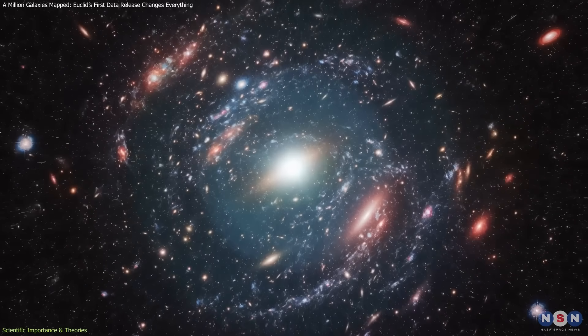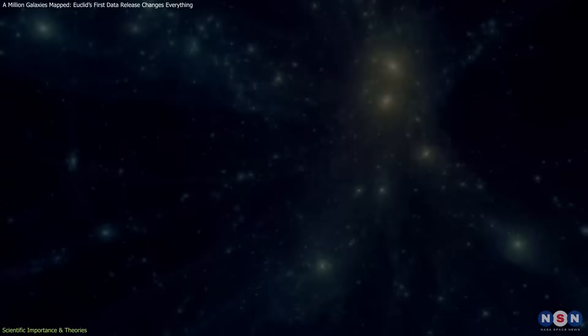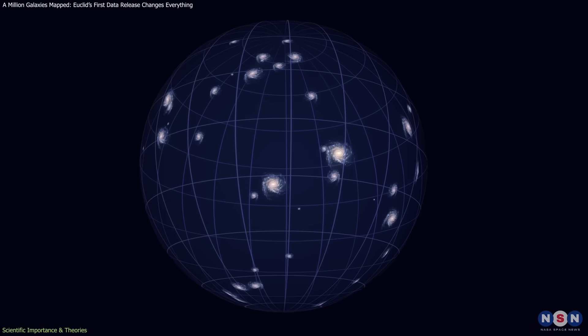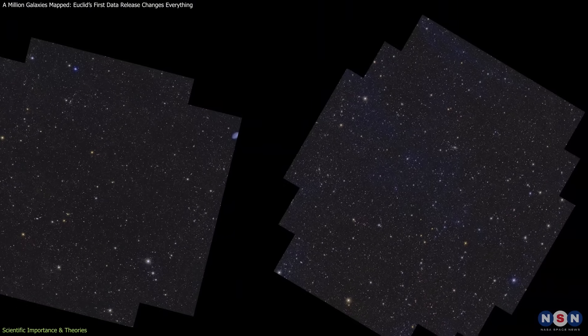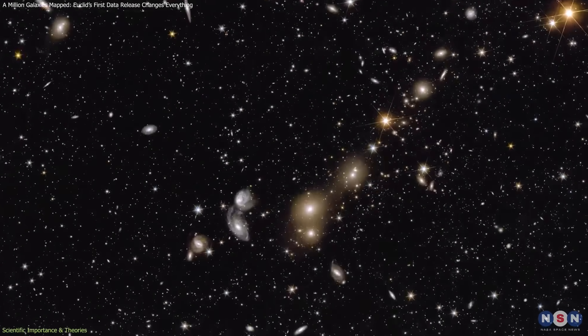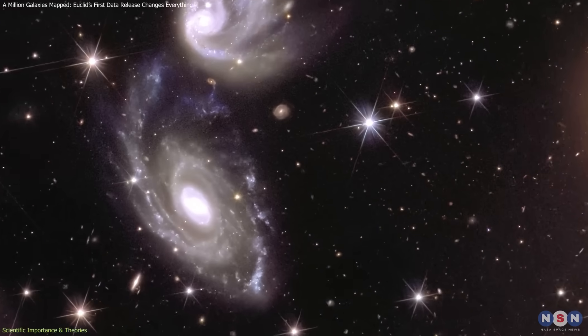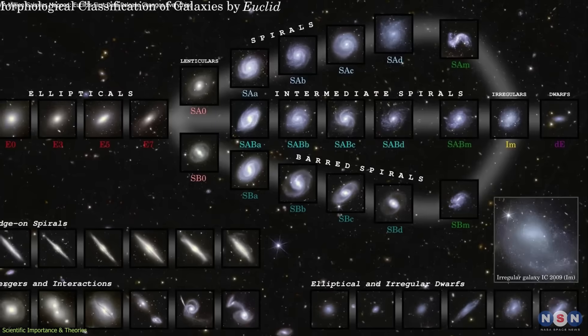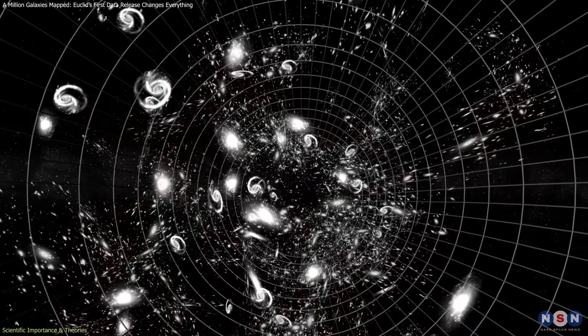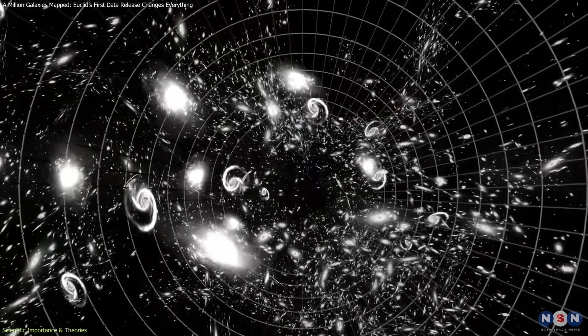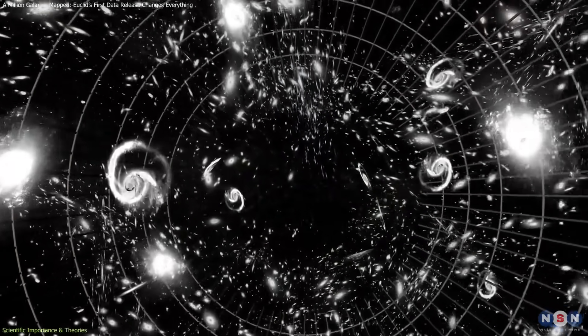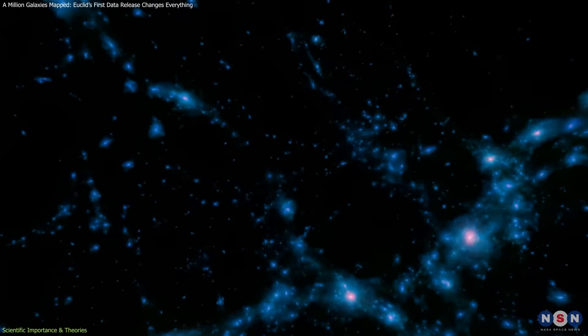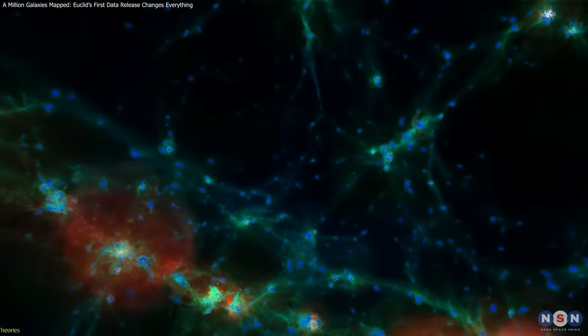All of these results feed directly into broader cosmological studies. Galaxy evolution is closely tied to dark matter, large-scale structure, and the expansion of the universe. Euclid's survey is not just large, it is uniform, with consistent resolution and depth across a vast portion of the sky. That consistency is what makes it valuable for testing theories. Patterns in morphology, star formation, and galaxy clustering can now be traced across cosmic scales with far greater reliability. The early findings demonstrate that Euclid is already enriching models of how galaxies grow, transform, and interact within the evolving cosmic web.